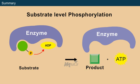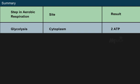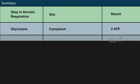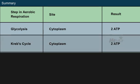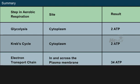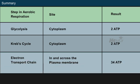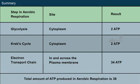Summary. Substrate-level phosphorylation is the enzymatic transfer of a phosphate group from an organic molecule to adenosine diphosphate molecule to form adenosine triphosphate. The net ATP production in glycolysis is 2. In Krebs cycle, it is 2. While in electron transport chain, it is 34. Hence, the total amount of ATP produced by aerobic respiration is 38.